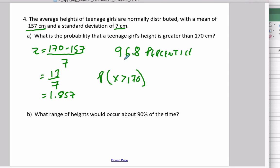Well, if 170 is the 96.8 percentile, then the probability that a teenage girl's height is going to be greater than that will be 1 minus 0.968, which is approximately equal to 3.2 percent. So the probability that a teenage girl has a height greater than 170 centimeters will be 3.2 percent.